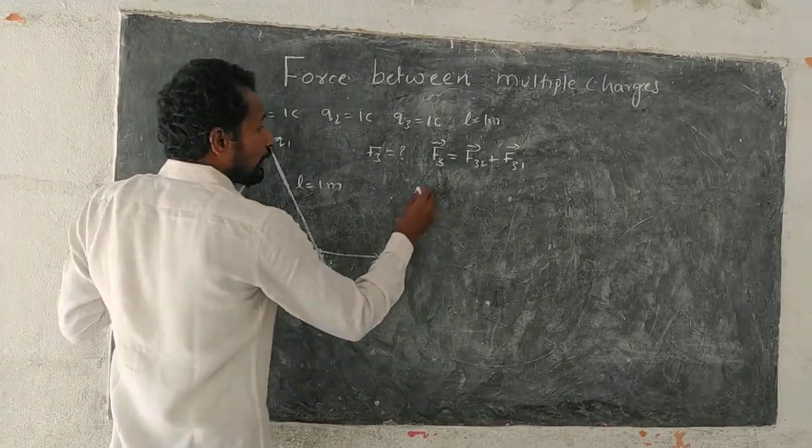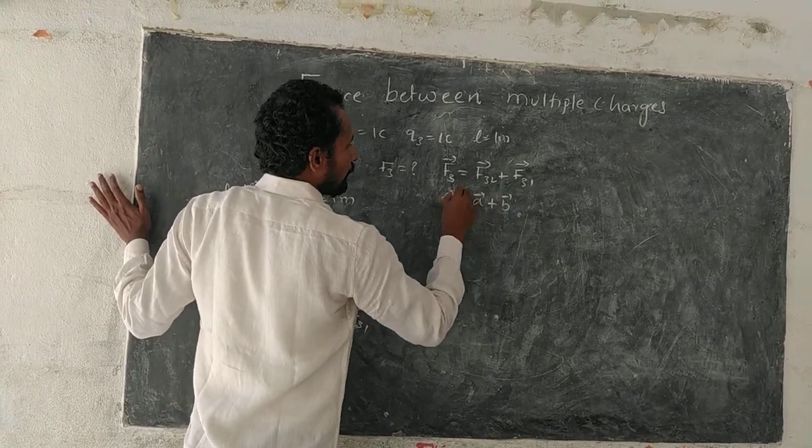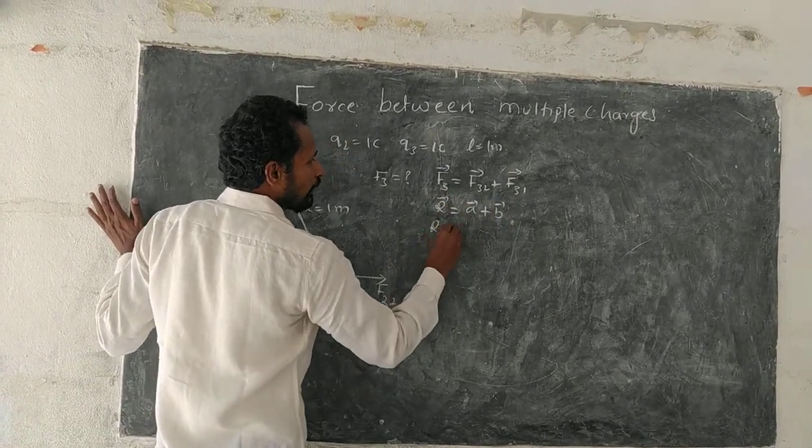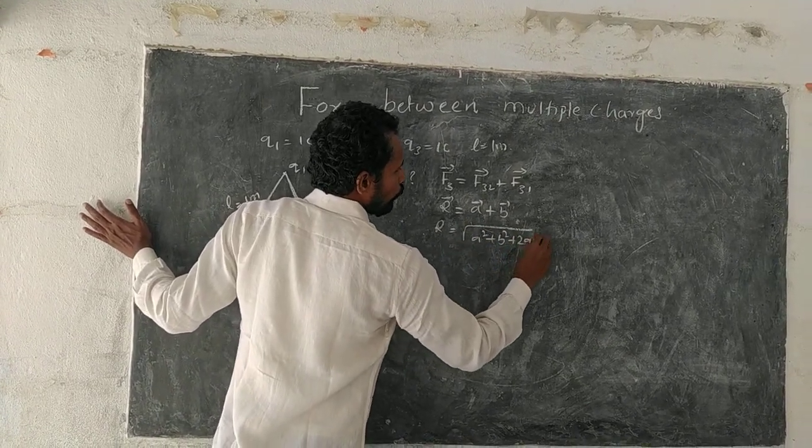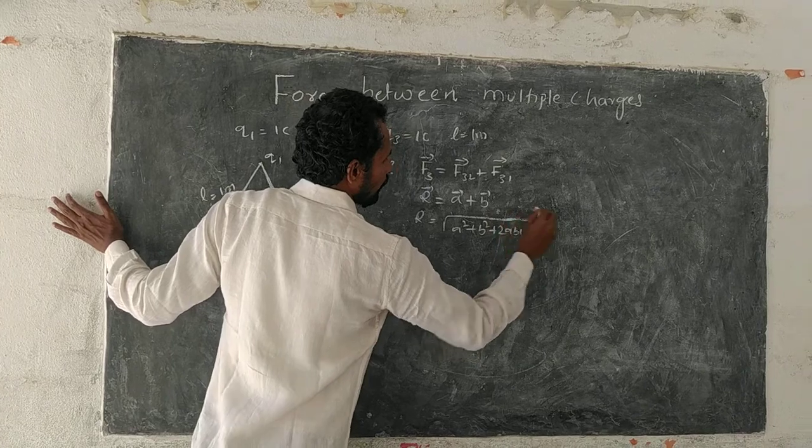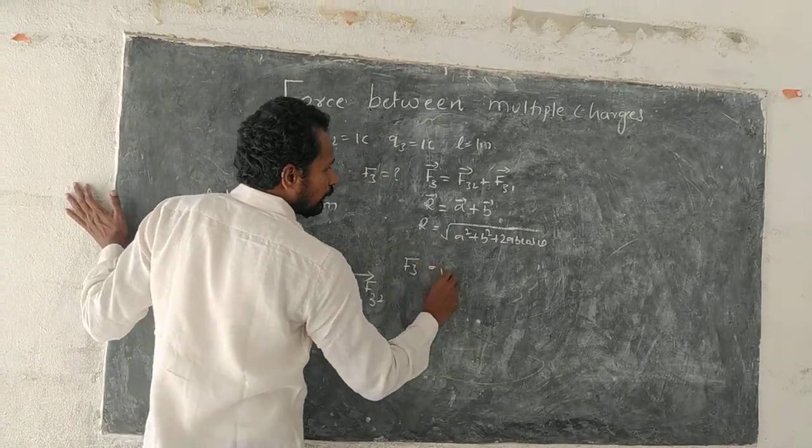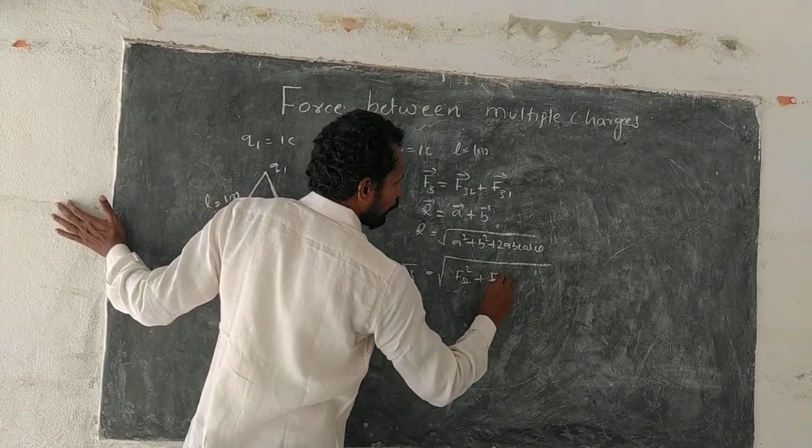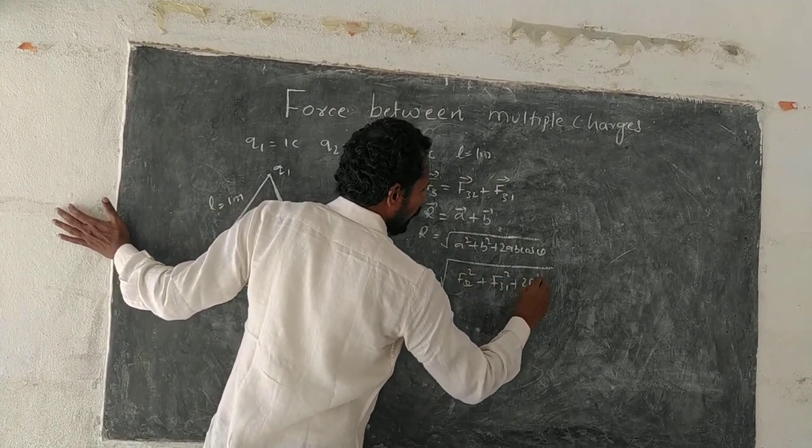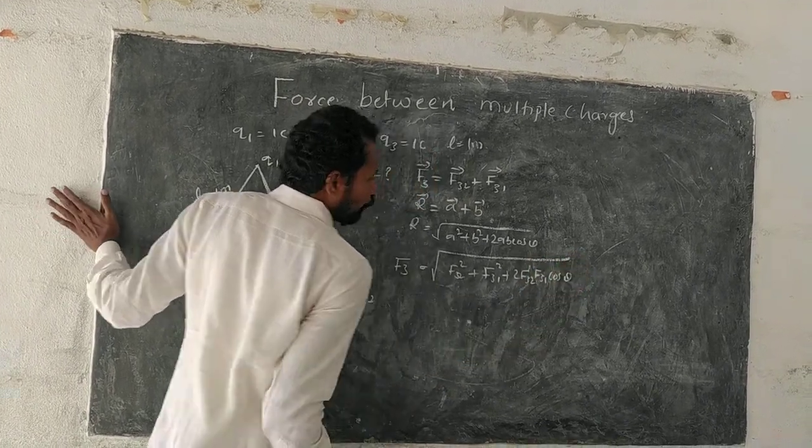In vector sum, you have already studied, R equals A plus B, the resultant vector. This magnitude is R equals root of A squared plus B squared plus 2AB cos theta. Similarly, F3 equals F32 squared plus F31 squared plus 2F32 F31 cos theta.